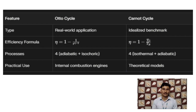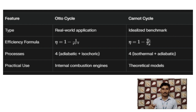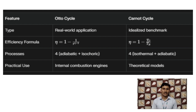Now that we have covered both cycles, let's compare them in tabular form. The Otto cycle is a real world application, while the Carnot cycle is an ideal situation, meaning more assumptions are made in the Carnot cycle. The efficiency formula for the Otto cycle is 1 minus 1 upon R to the power gamma minus 1, and for the Carnot cycle it is eta equals 1 minus Tc upon Th. The practical application of the Otto cycle is the internal combustion engine used in motorcycles, cars, and bikes. The Carnot cycle is theoretical and has no direct practical application.